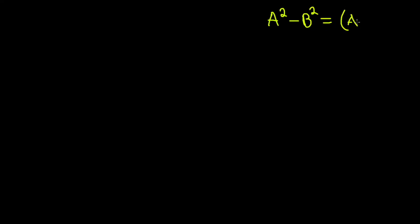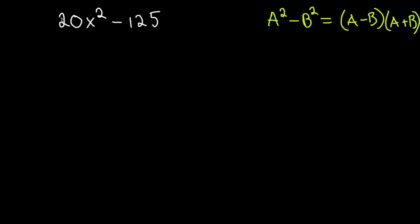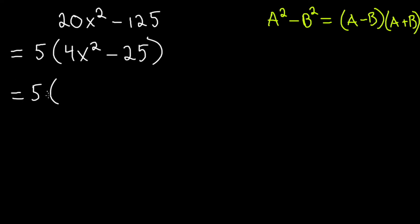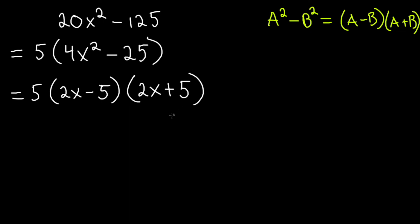The next special case, which comes up quite often, is the difference of squares: a squared minus b squared equals (a minus b)(a plus b). For example, 20x squared minus 125 — you can't square root 20 or 125 directly, so factor out a 5 first, giving 5(4x squared minus 25). Now you can square root both: 4x squared gives 2x, and 25 gives 5. So the answer is 5(2x minus 5)(2x plus 5). Expanding confirms you arrive at the same conclusion.